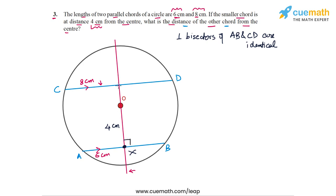What we have to find is the distance of CD from O. Let this point be Y, so we have to find the length of OY. We can first consider the triangle OBX. In this triangle, we can apply the Pythagoras theorem, which will give us the radius of the circle. Let's highlight this triangle OBX.